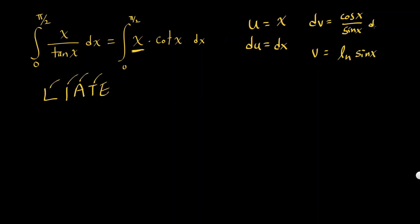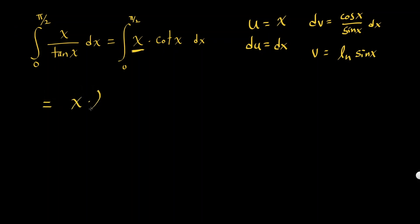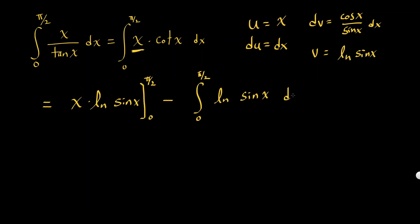I've got dx over here. This integral should be uv, so it's going to be x times natural log of sine x. I have to evaluate it because my bound is going to be from 0 to pi over 2. Then minus the integral from 0 to pi over 2 of natural log of sine x dx.